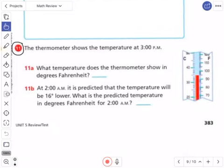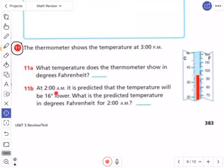For number 11B, at 2 o'clock AM it is predicted that the temperature will be 16 degrees lower. What's the predicted temperature in degrees Fahrenheit for 2 AM? Take this answer and it says the temperature will be 16 degrees lower, so I have to think: is that going to be plus 16 or minus 16?